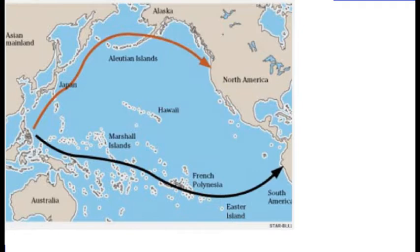There's also evidence which indicates that Polynesian peoples traveled on the lower route shown on the map, hopping from island to island until making the larger leap to South America. Evidence exists for both theories, and they don't need to be a contradiction to each other. Both are possible and could have happened at different times.